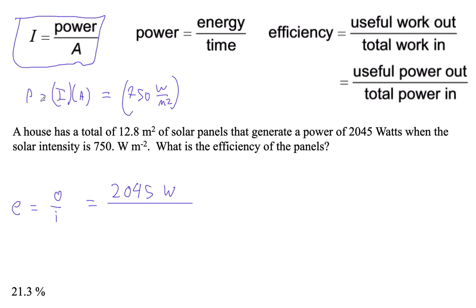This is the input of power. And it's 12.8 square meters. So let's figure that out. 750 times 12.8, that's 9,600 watts.